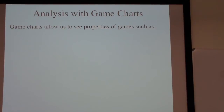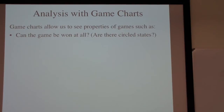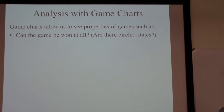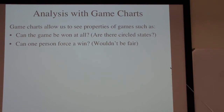There are a variety of properties that these game charts allow us to see, at least reasonably easily. One is: can the game be won at all? We should be able to see that by having those circled states — we can identify where those are by the positions that have one kind of edge coming in but not the other. Is it possible to force a win? We hope not, because otherwise that would mean the game is somehow tilted in one person's favor. But we'll be able to see that sort of thing pretty easily on the game charts.